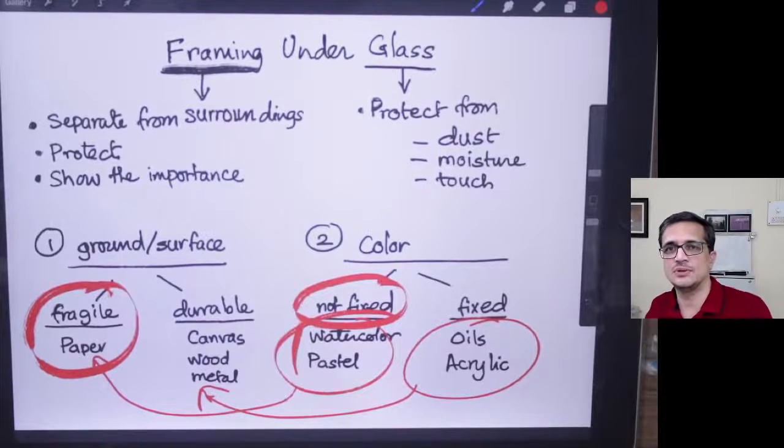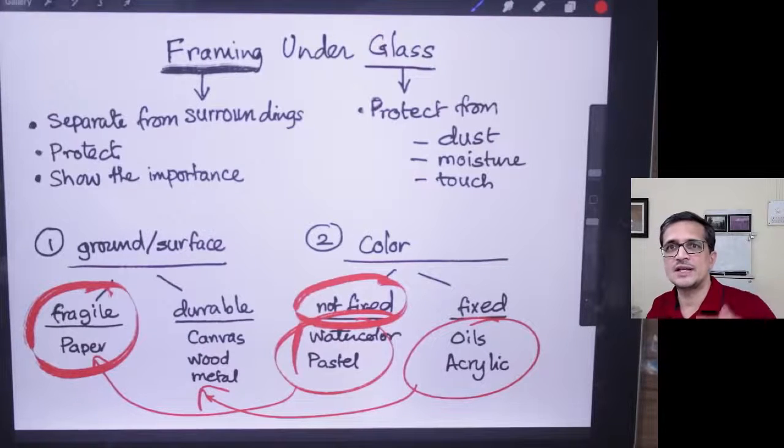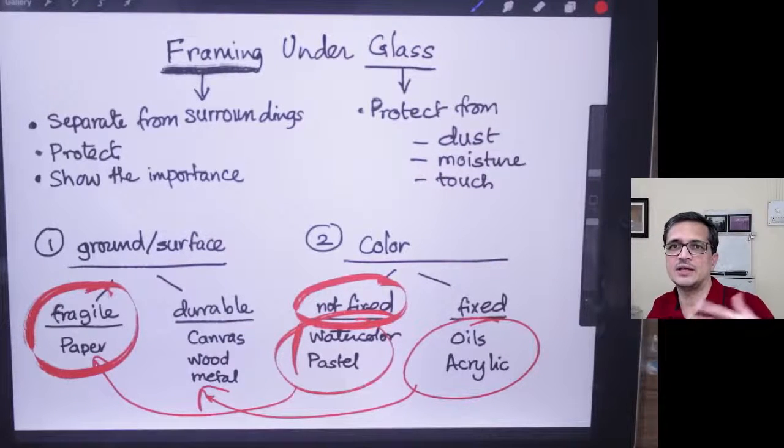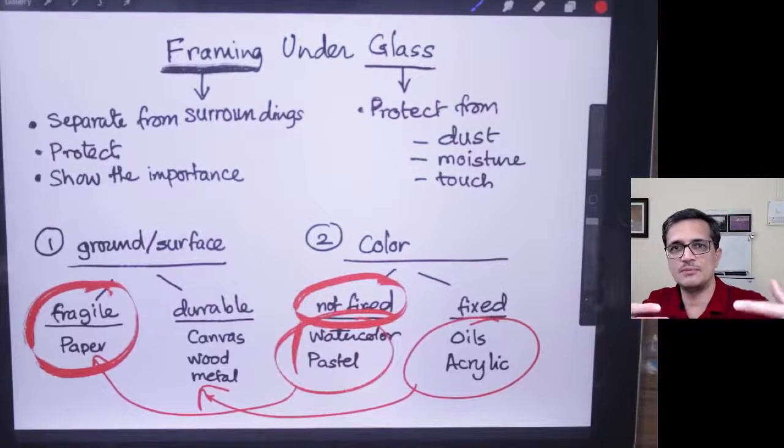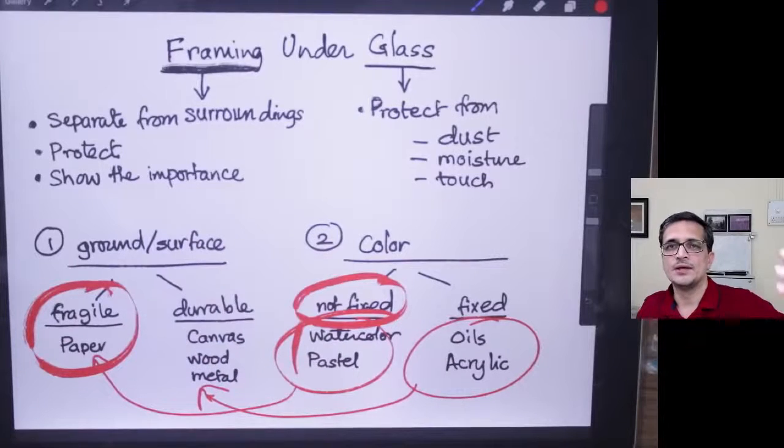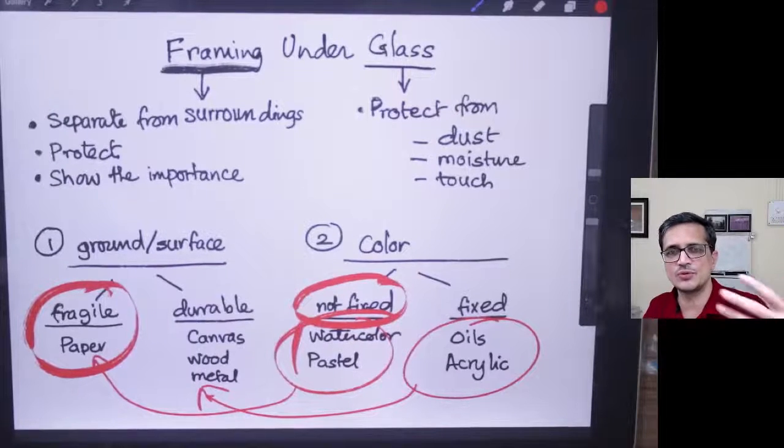But there are disadvantages of having a glass on the painting, which is that if there is a light source, when people come and view your painting, people tend to see the reflection of glass on the painting surface, which is of course bad for the viewer because he cannot see the painting clearly.